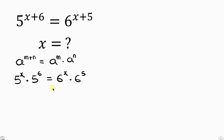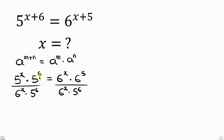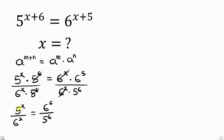Our next step is to divide both sides of the equation by 6 to the power of x and also by 5 to the power of 6. Notice that 5 to the power of 6 will cancel off, leaving behind 5 to the power of x over 6 to the power of x. Also notice that 6 to the power of x will cancel off, leaving 6 to the power of 5 all over 5 to the power of 6.